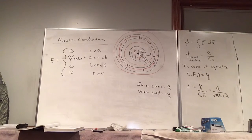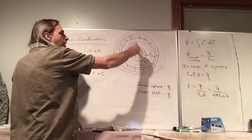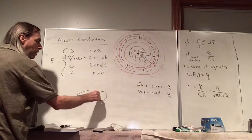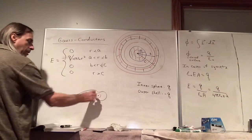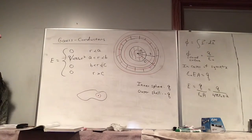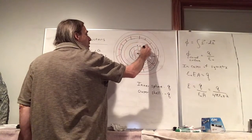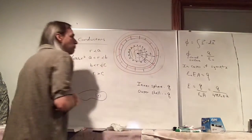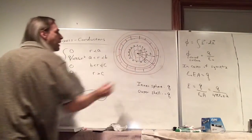Now let's look at the charge distribution — how are charges distributed? We know that at any point inside a conductor, we can always draw a Gaussian surface completely enclosed in the conductor where the electric field is zero, so the net charge inside must be zero. There can't be any charge inside the conductor itself. So if the inner sphere has charge Q, that charge has to be distributed on its outer surface.